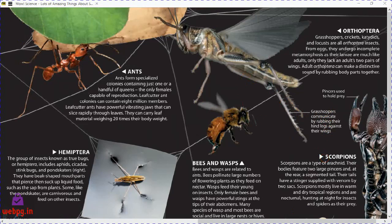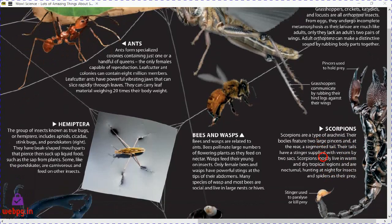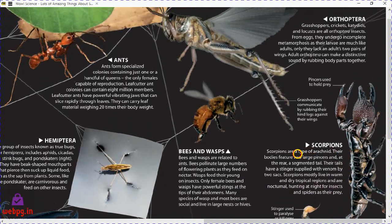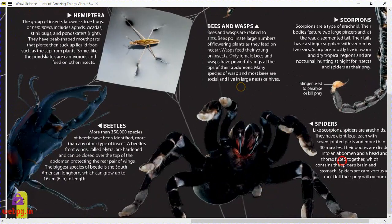Scorpions are a type of arachnid. A scorpion's body features two large pincers at the front and a segmented tail at the rear. Their tail stinger is supplied with venom by two sacs. The stinger is used to paralyze or kill prey — it's very dangerous. Scorpions mostly live in warm and dry tropical regions and are typically nocturnal, hunting at night for insects and spiders.